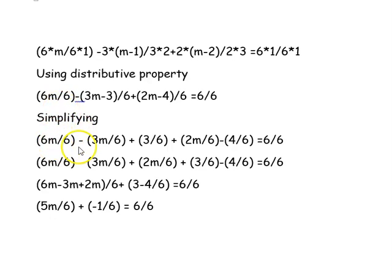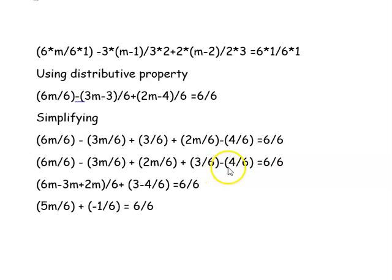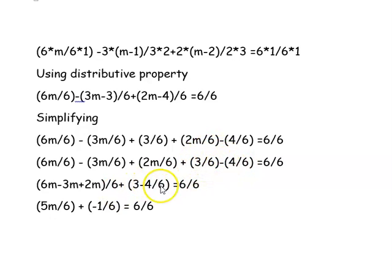We now simplify by separating the m-terms and constants. Rearranging: (6m minus 3m plus 2m) over 6, plus (3 minus 4) over 6, equals 6 over 6. Combining: 5m over 6, plus minus 1 over 6, equals 6 over 6.